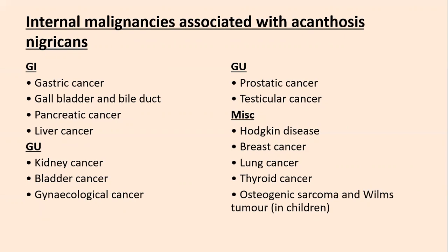Internal malignancies associated with acanthosis nigricans: GI malignancies are the most common, with gastric cancer being foremost, followed by gallbladder and bile duct cancer, pancreatic cancer, and liver cancer. Genitourinary malignancies include kidney, bladder, gynecological tract, prostate, and testicular cancers. Miscellaneous cancers include Hodgkin's disease, breast, lung, thyroid, osteogenic sarcoma, and Wilms' tumor in children.